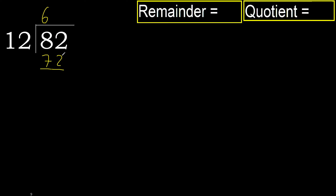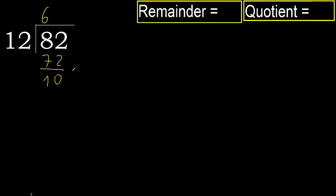82 minus 72 is 10. 2 minus 2 is 0, subtract 1. Next, there is no number, therefore finish.